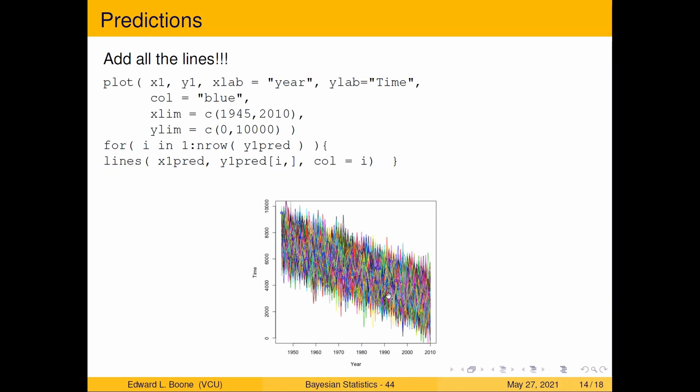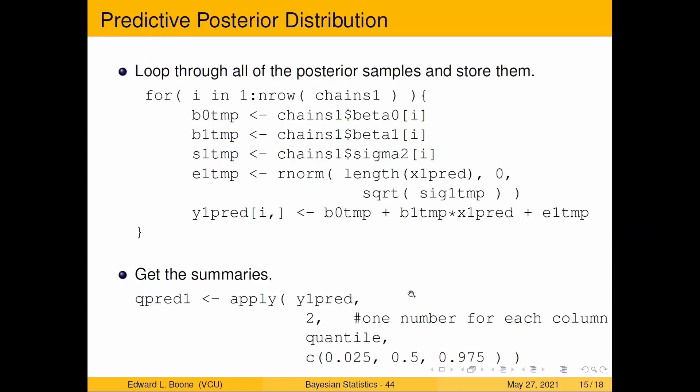Can get the quantiles out of them, and that will give me my interval and also give me a new equation of a line because I can use the median. Here's what I'm going to do: I'm going to take y pred, I'm going to use apply two because I'm going down the columns, so I'm going to have one number for each column. I'm going to use the quantile function.